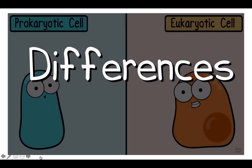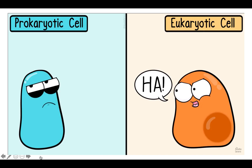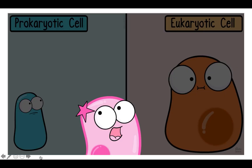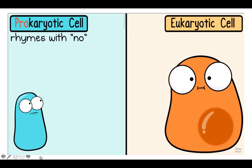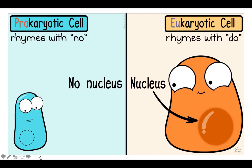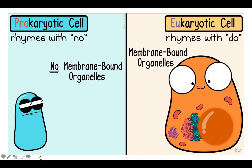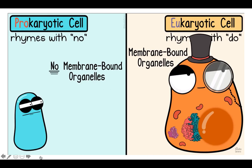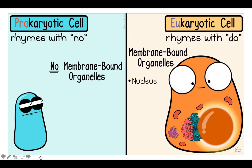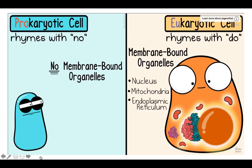What makes prokaryotic cells and eukaryotic cells different is especially interesting. Eukaryotic cells are more complex than prokaryotic cells and tend to be larger. To remember the differences, I like to remember that 'pro' in prokaryote rhymes with 'no,' and 'you' in eukaryote rhymes with 'do.' Prokaryotic cells have no nucleus to contain their DNA, so their DNA is not contained within a nucleus — it's a bit messy. They have no membrane-bound organelles. Membrane-bound organelles are fancy organelles that have their own membrane, like the nucleus, mitochondria, the endoplasmic reticulum, and the Golgi apparatus.